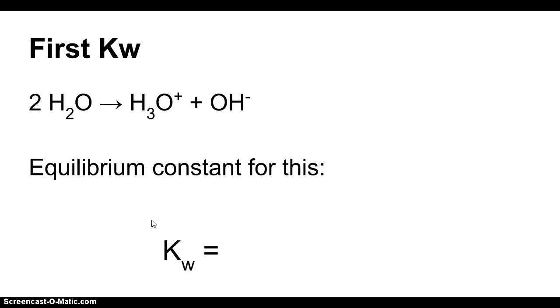So first thing is we need to understand what Kw is. Kw is the equilibrium constant for the dissociation of water. Water is always in equilibrium. Two waters can collide and have an exchange of protons where one goes to one water to make it an H3O+, and the other one lost a proton, so it makes it an OH-.